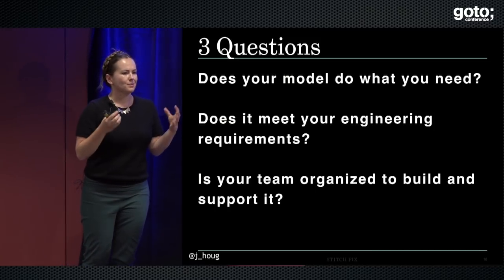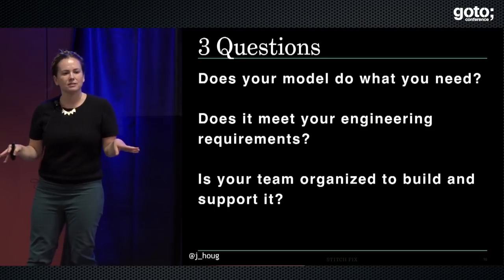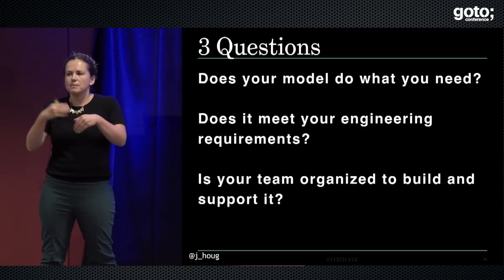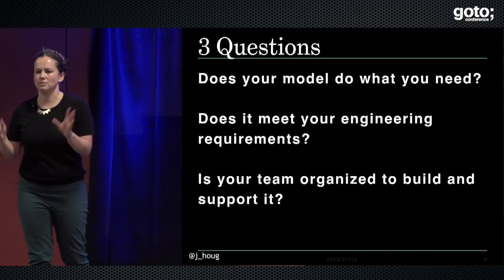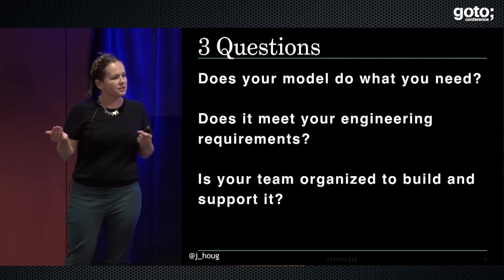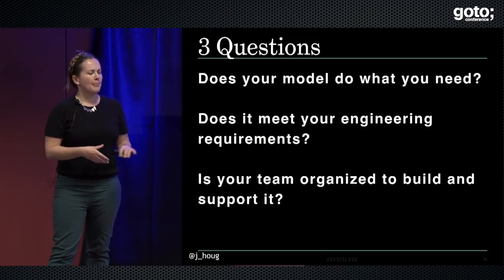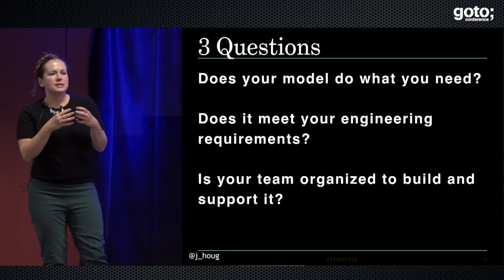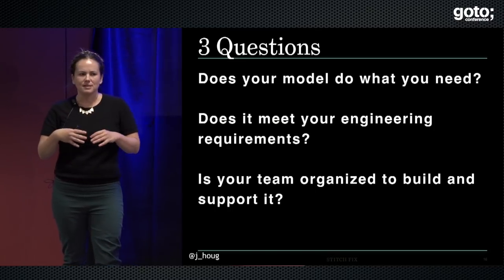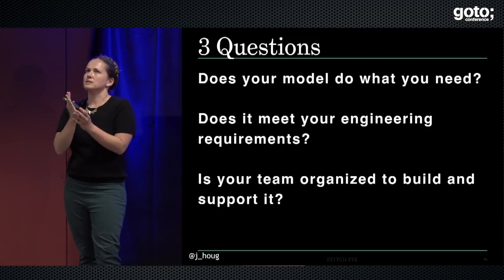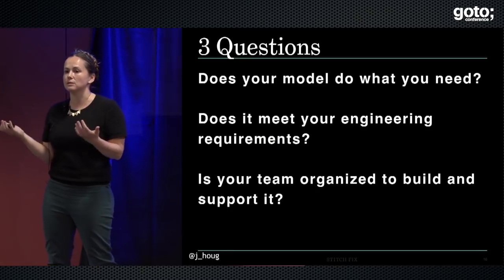Once you've gotten to the point where you know you've made a model and you need to write it out somewhere and read it back in, you need to think beyond that simple interface. There are three classes of questions we should be asking. First: does your model do what you need — both at a basic level of, does this thing function, and beyond that, does it function as you expect? When you did your validation offline it seemed effective, but is it actually making you more money? Is it getting you more clicks? Does it meet your engineering requirements — things like throughput and latency? And is your team actually organized to build and support this type of model? This last question is really interesting because data-driven capabilities at this scale are relatively new, and team structure is very intertwined with the types of systems we end up being capable of building.